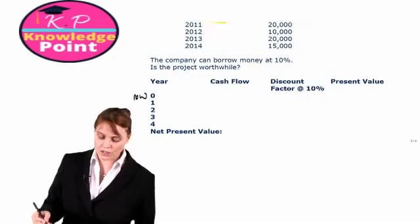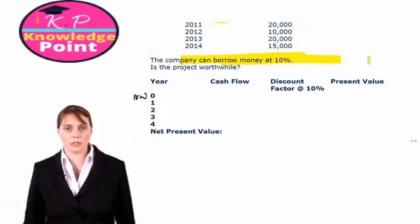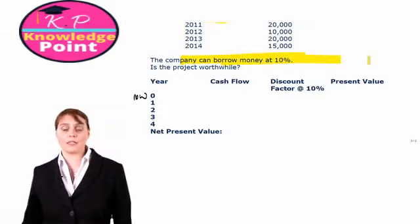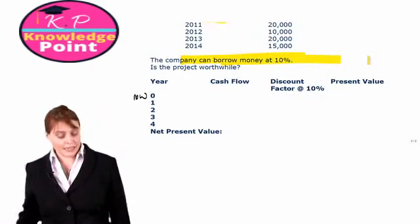Now we've been told in the question that the company can borrow money at 10%, so our discount rate is 10%. So let's fill in our table.